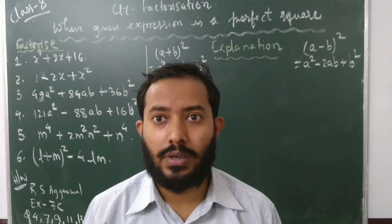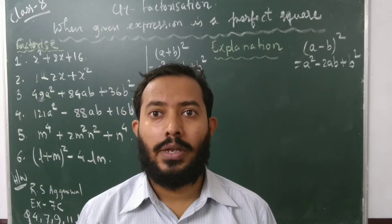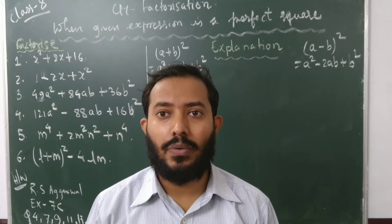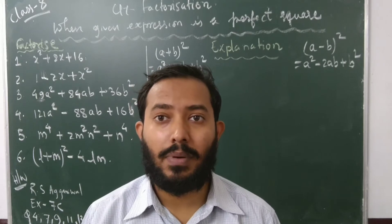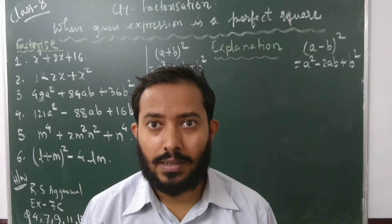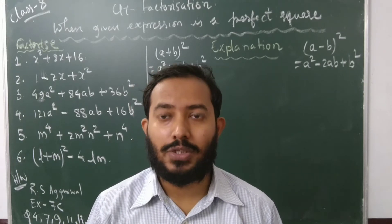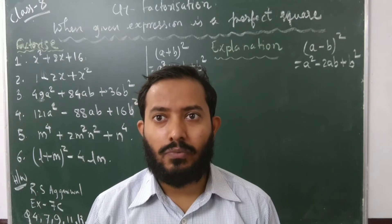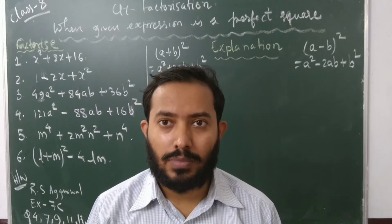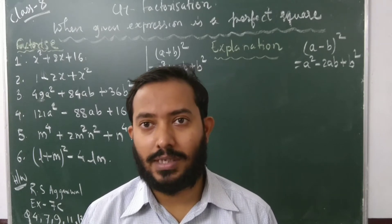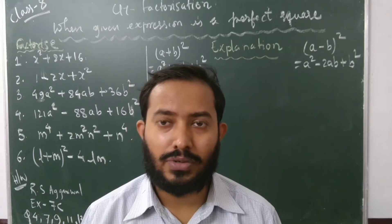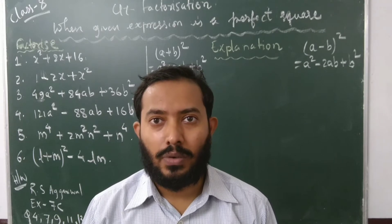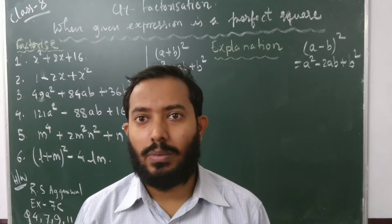Namaste. Today we are going to see a new topic: factorization when the given expression is a perfect square, that means using the (a+b)² and (a-b)² formulas. We have a few problems related to this concept and we'll try to understand how to solve this type of problem. Let's see them one by one.